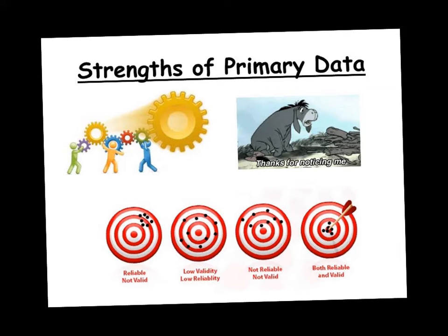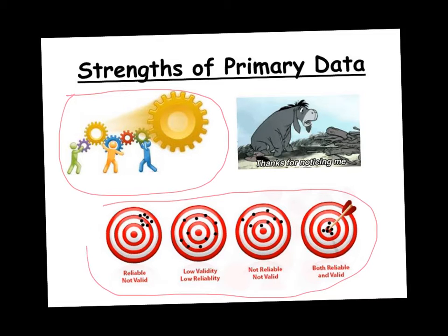There are strengths and limitations of both types of data. A strength of primary data is that the sociologist has a high level of control, because they're deciding what to research, how to research it, and what to do with the results. This means they can achieve a high level of both reliability and validity. Remember, reliability is about results being replicated and getting similar results, while validity is about it being an accurate reflection of something.